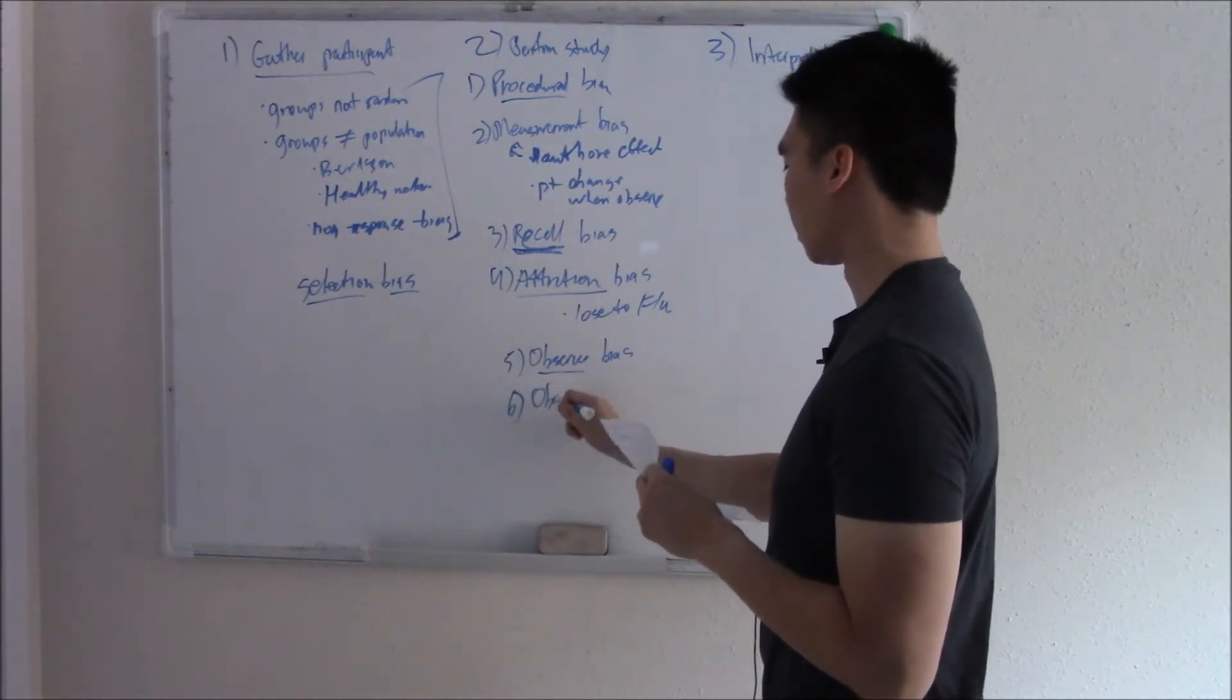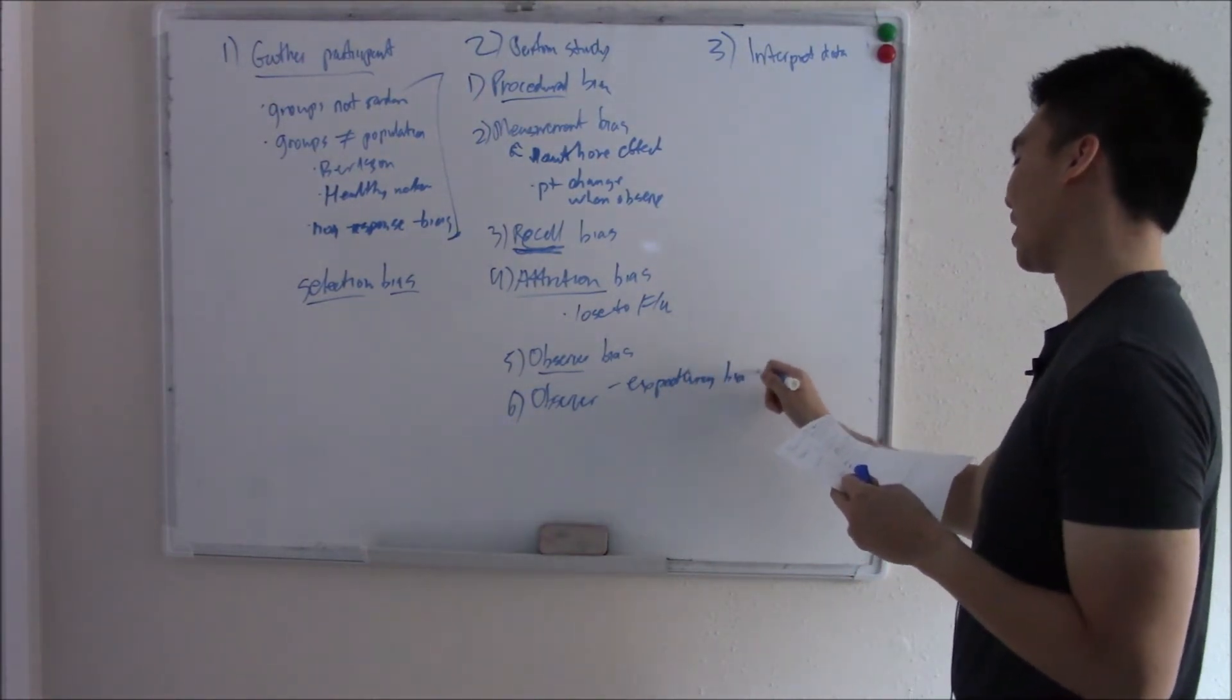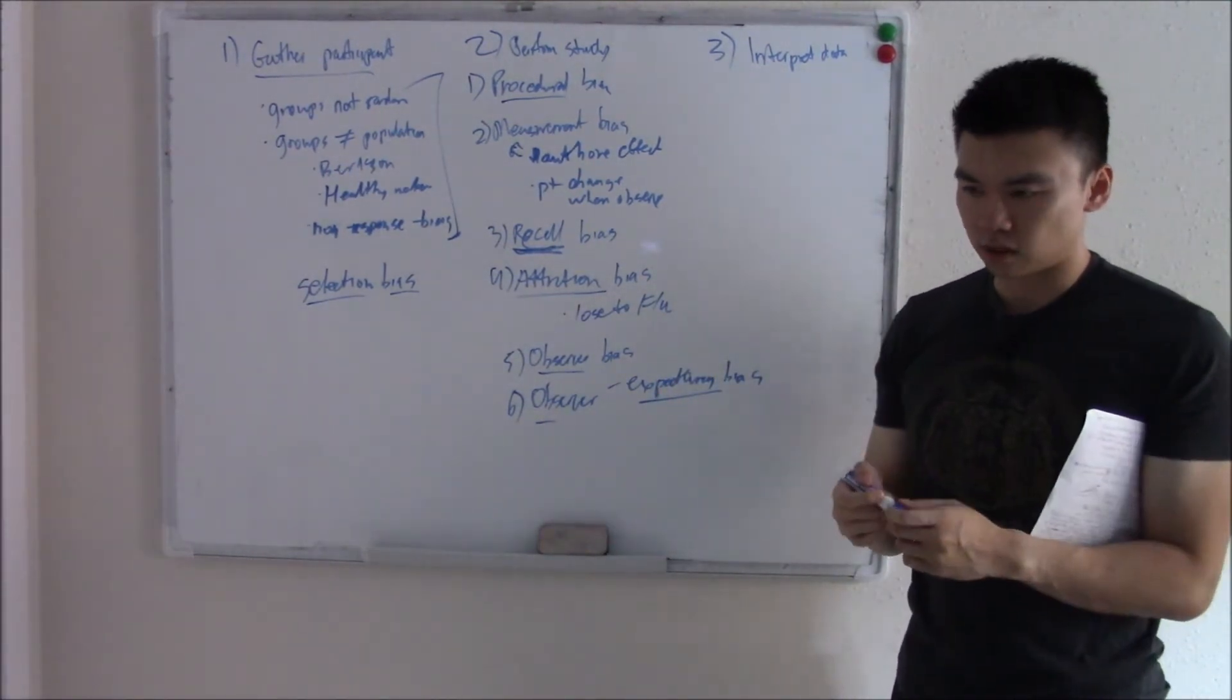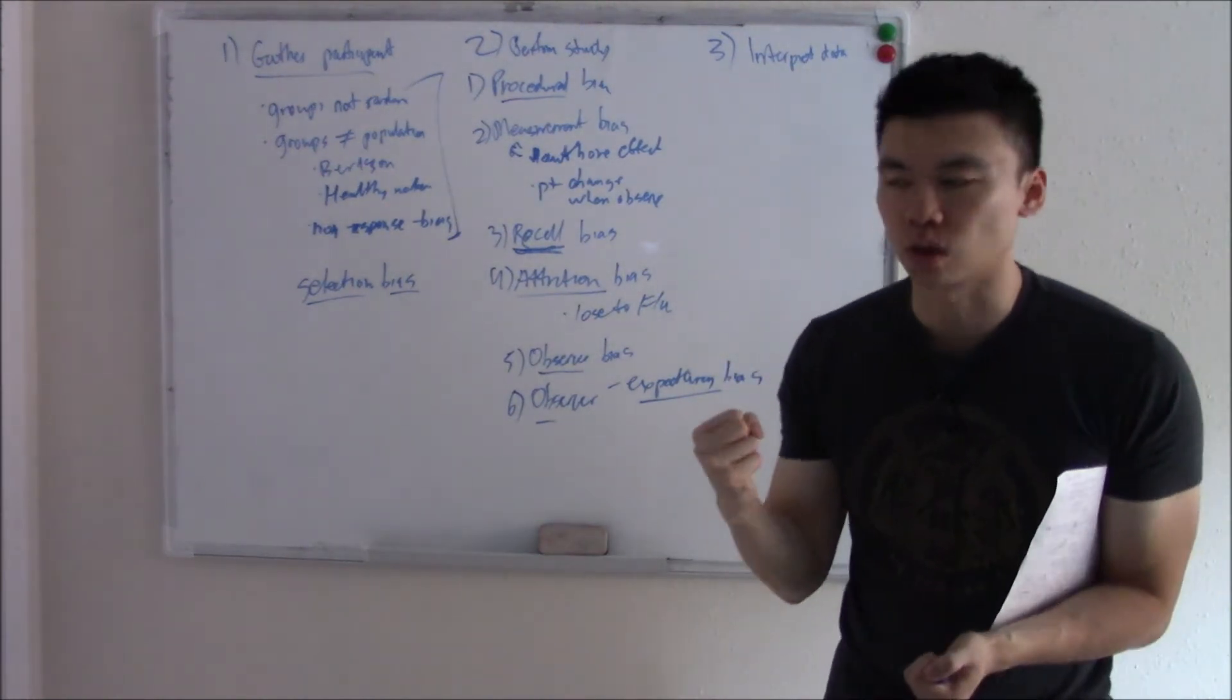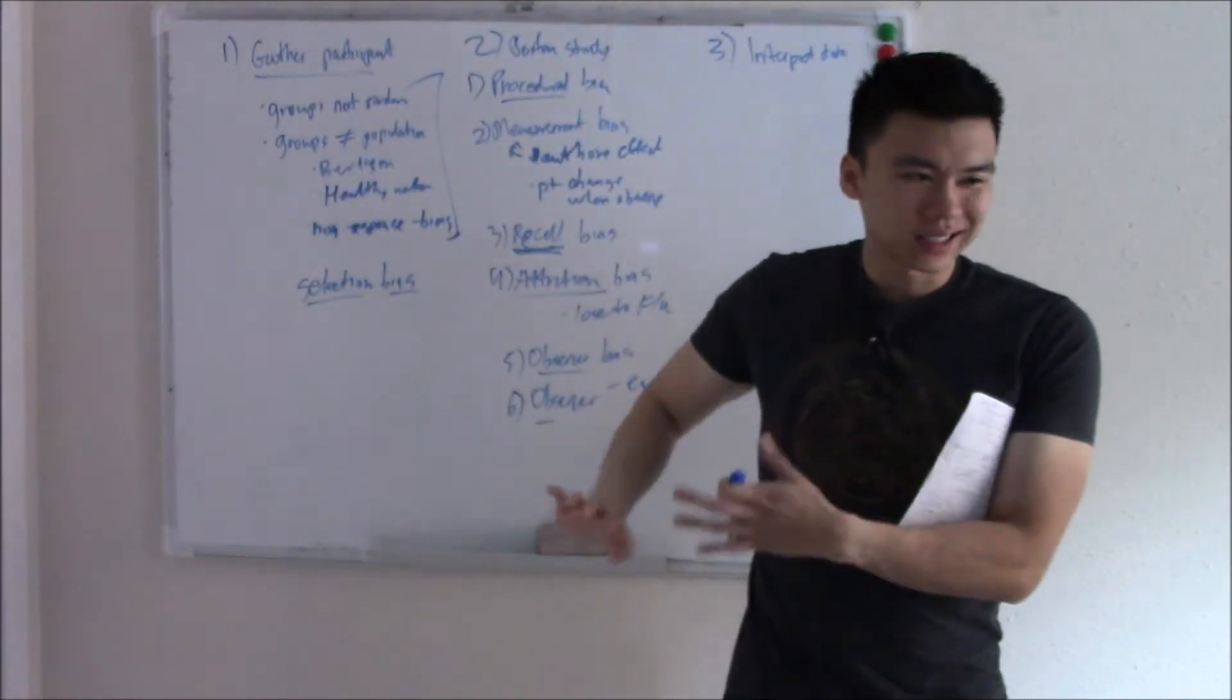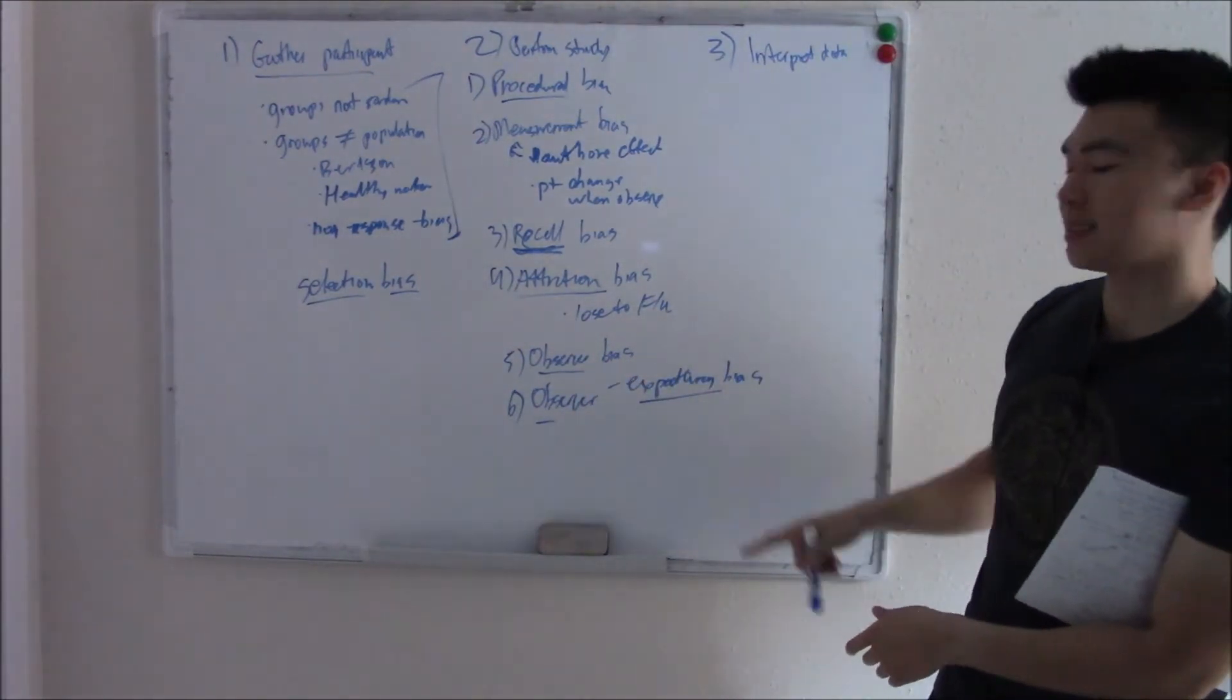You can have observer expectancy bias. Name gives it away. The observer, the researcher, is expecting a result. Maybe the observer really wants this drug to work. They're expecting this drug to work. So any positive outcome, they document it right away. Any negative outcome, oh, they kind of shoo it away. Maybe that's not statistically significant. We're not going to list that. Observer expectancy bias.